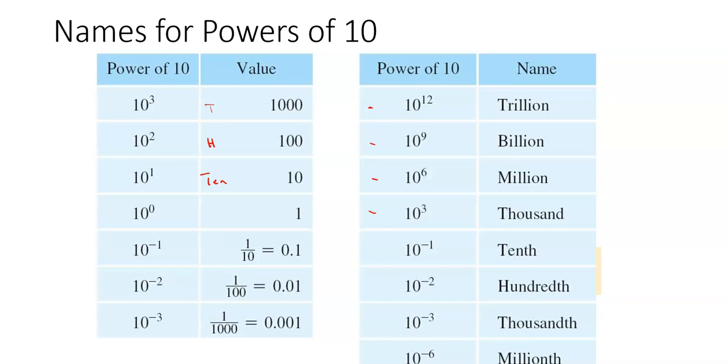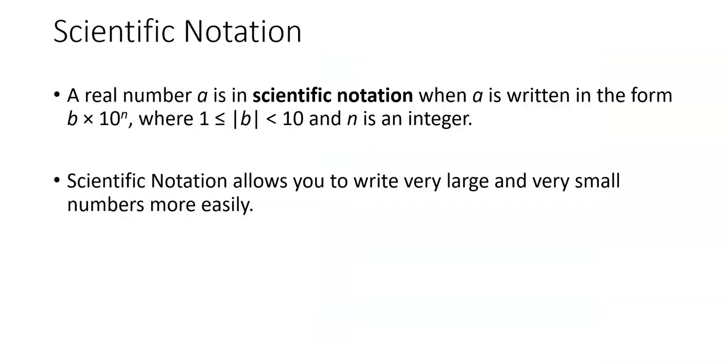If you are dealing with very large numbers or very tiny numbers, scientific notation is a way to write those very large and very small numbers more easily. It can be written in the form of some number times 10 to a power where that number is between 1 and 10 and n is an integer.